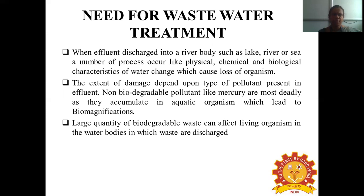The extent of damage depends upon the type of pollutant present. Non-biodegradable pollutants like mercury are mostly deadly and they accumulate in aquatic organisms, which leads to the biomagnification process. Large quantities of biodegradable waste can also affect living organisms in the water bodies into which the water is discharged. Biomagnification is a process in which the harmful effect of toxic toxins increases at each level of the ecosystem.